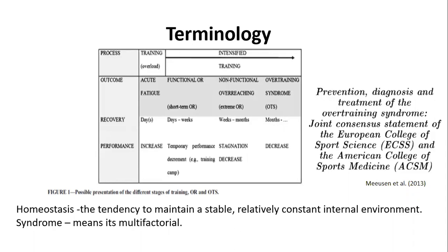Looking at this figure, in the top left corner we have a training process. With any training process we always have to induce some form of overload. We can think about the FITT principles — frequency, intensity, time, and type. In strength training it could be accumulation or intensification — going heavier or going for more reps at the same weight. There's always going to be some level of overload as we move along that timeline.